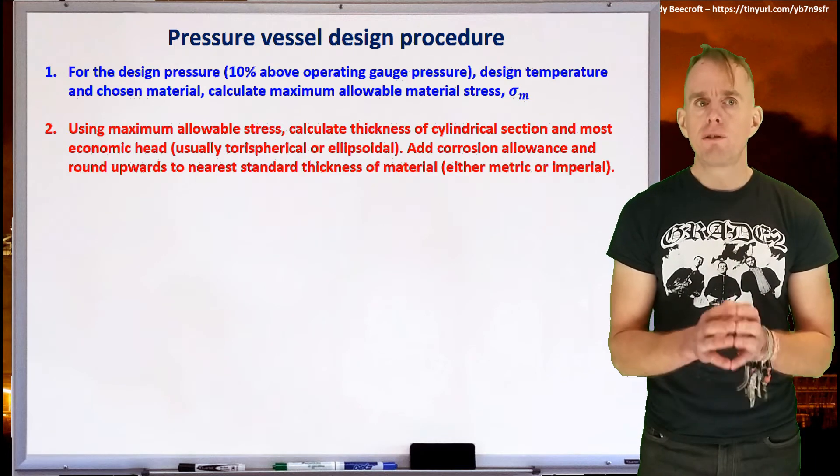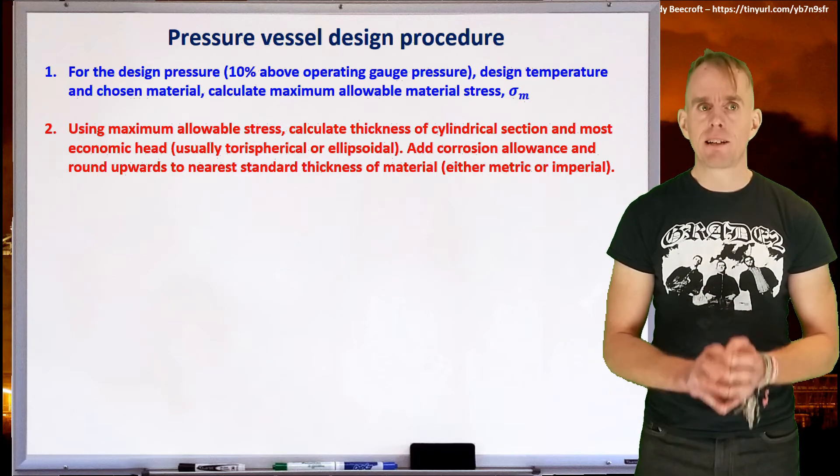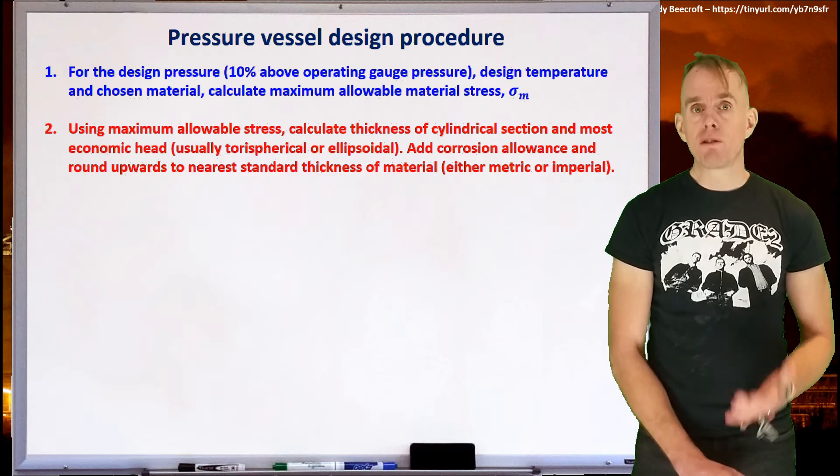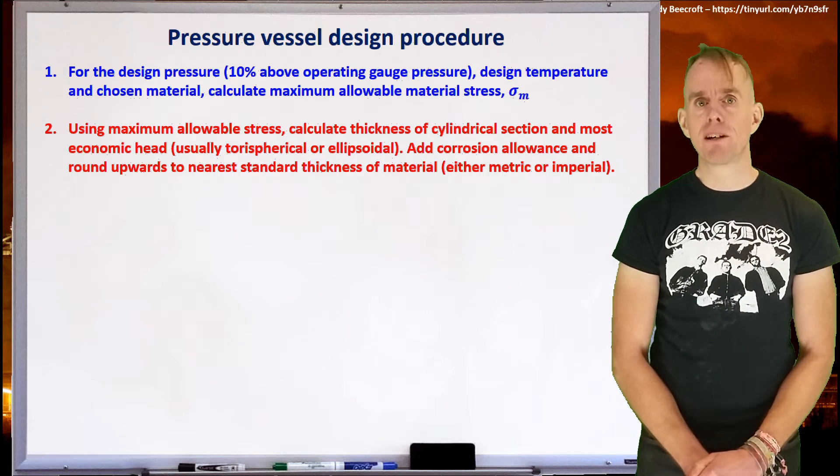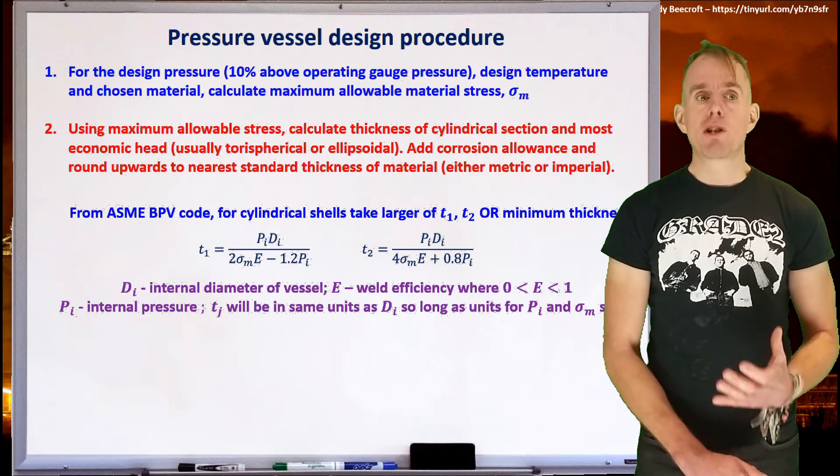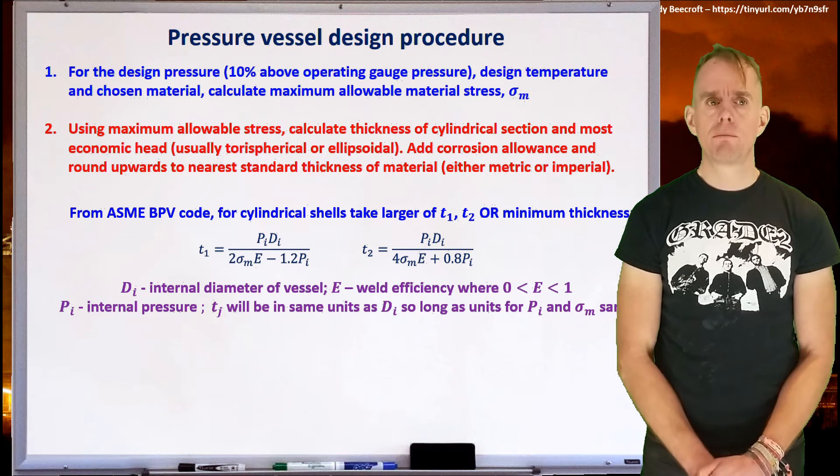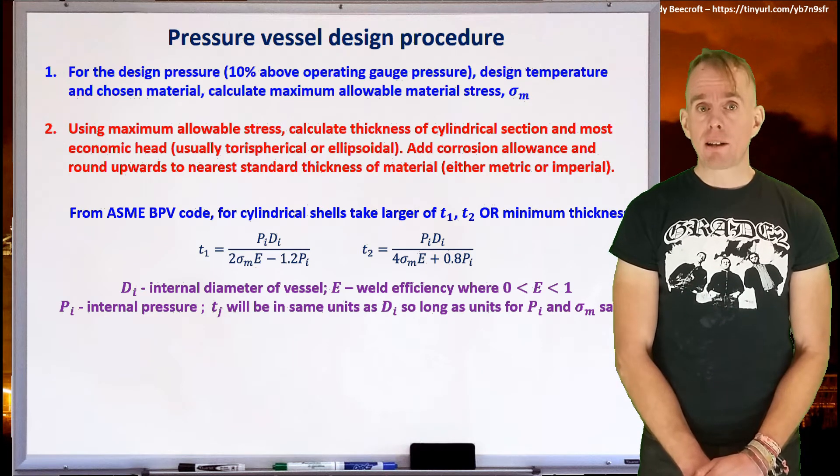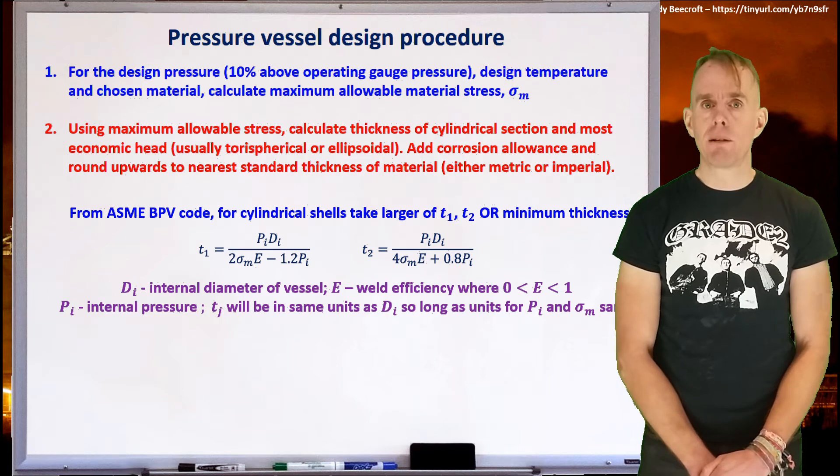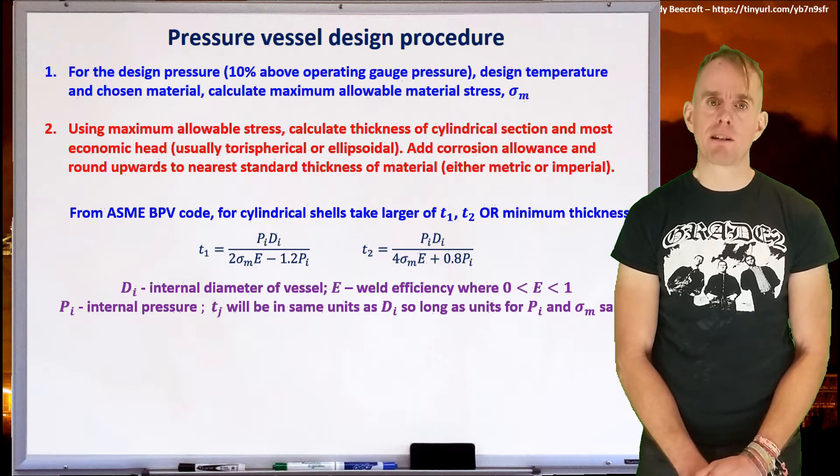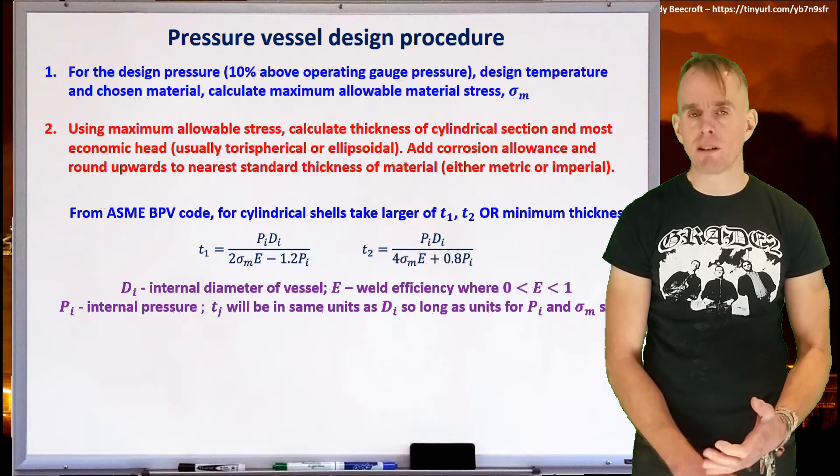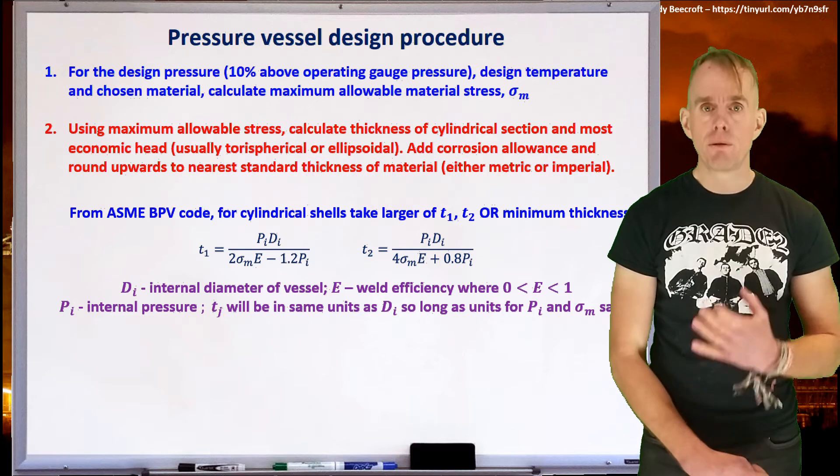The second thing you're going to do is to use this maximum allowable material stress and use it to calculate the thickness of the cylindrical section and of the heads of the vessel. So don't forget to add in corrosion allowances and always to round upwards to the nearest standard thickness of material, which will either be in metric units or imperial units depending where you're working. So, if we look at the formulae that are published for cylindrical shells, there are two thickness formulas that you use. What you do is you calculate the wall thickness using both of these formulae and take the larger of the two results. You then compare that result to the minimum standard thickness that is specified for the diameter of the pressure vessel that you're looking at.